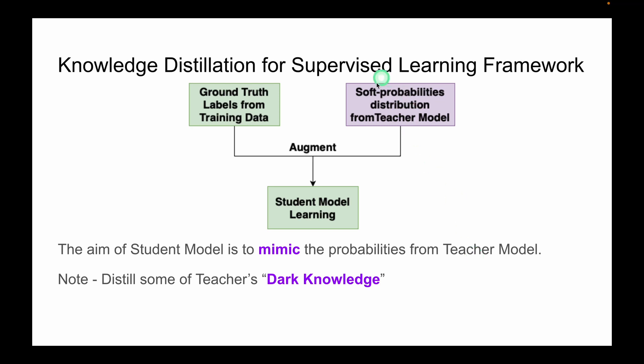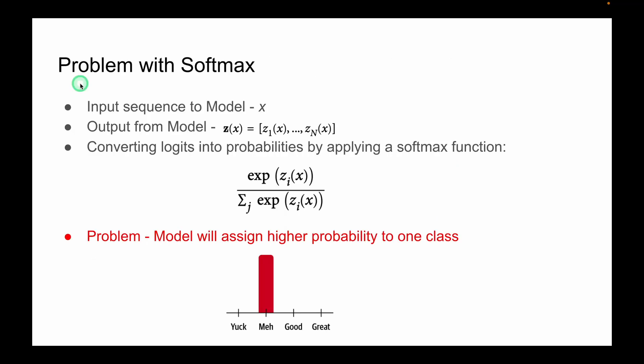Now what this soft probabilities and all mean, I'll be explaining in the next slide. But before that we need to talk about the problem with softmax functionality. Now suppose we feed an input sequence x to model to generate a vector of logits, namely z(x). We can convert these logits into probabilities by using the softmax function.